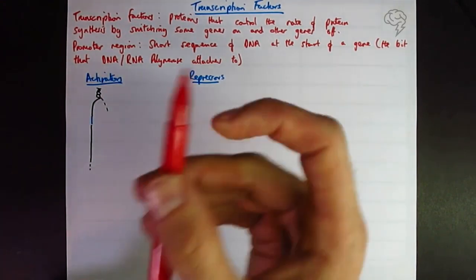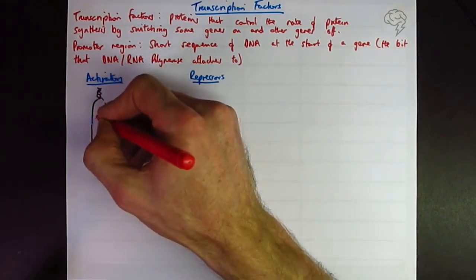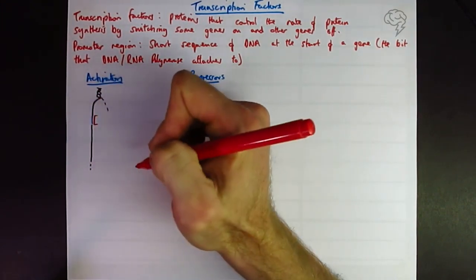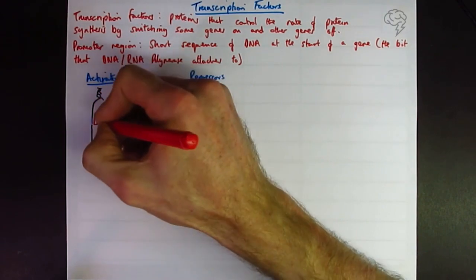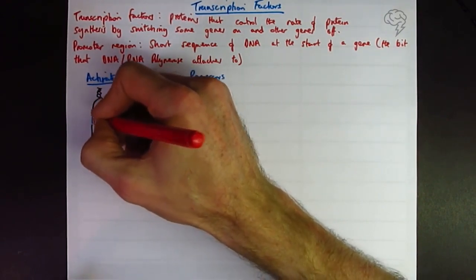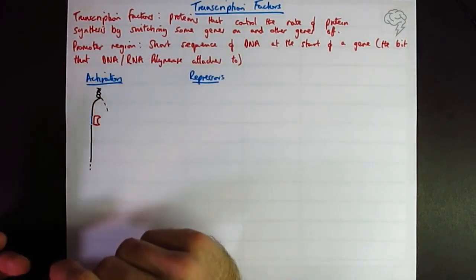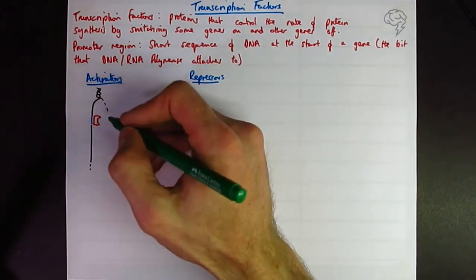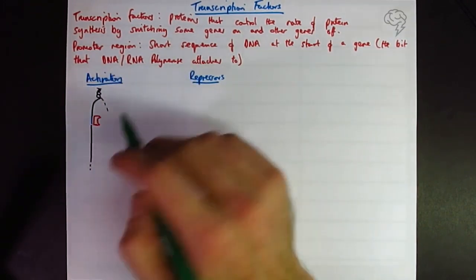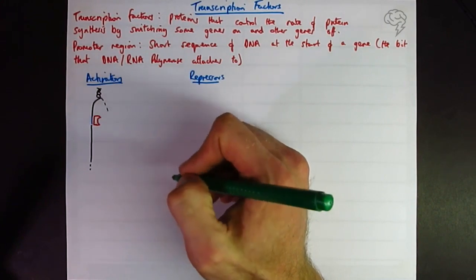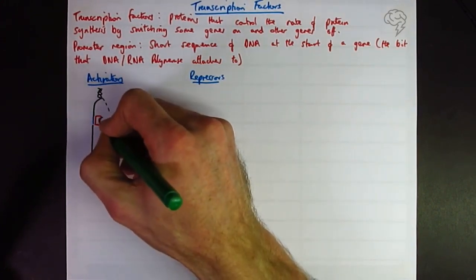So for an activator, this transcription factor, which I'm going to draw in red, is going to bind onto the promoter region. And if it's an activator, I'm going to draw something like a circular cup on the side of it. And that's going to help the RNA polymerase, because here we're making RNA, the RNA polymerase molecule to bind.